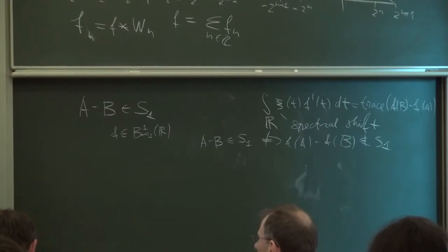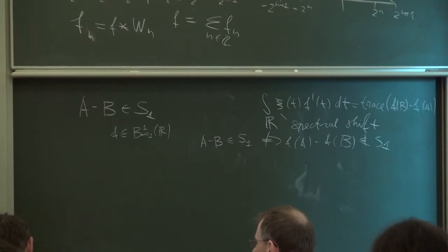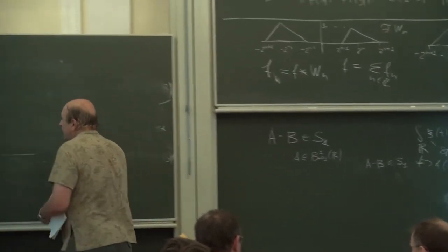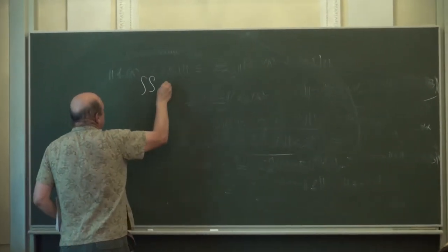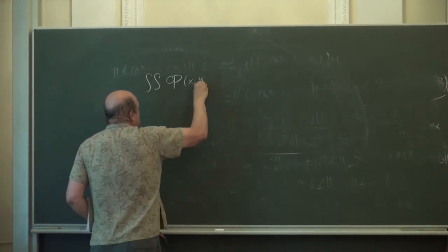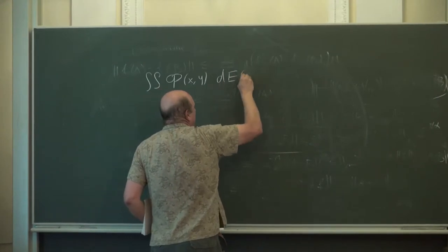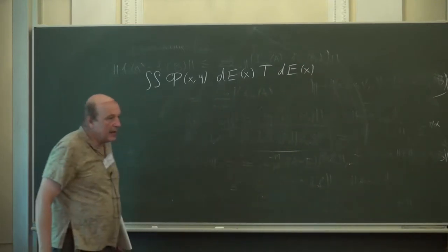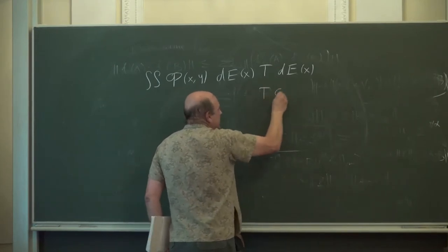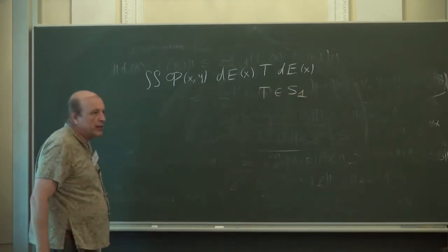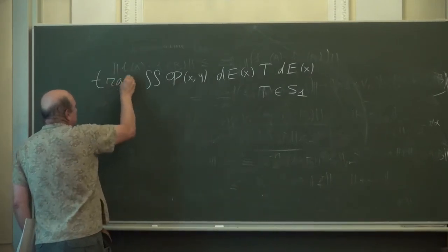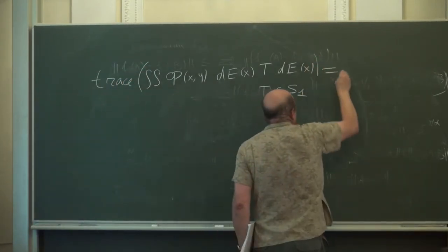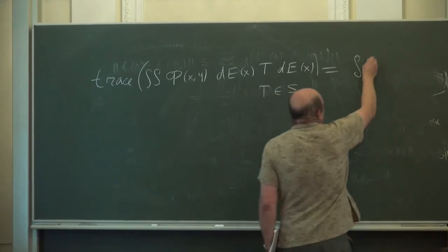Let me demonstrate the Birman-Solomyak approach to this problem using double operator integrals. First, let me make the following general observation due to Birman-Solomyak: suppose we have a double operator integral where the spectral measures are the same, and T is a trace class operator. Then the trace of this can be computed in the following way.